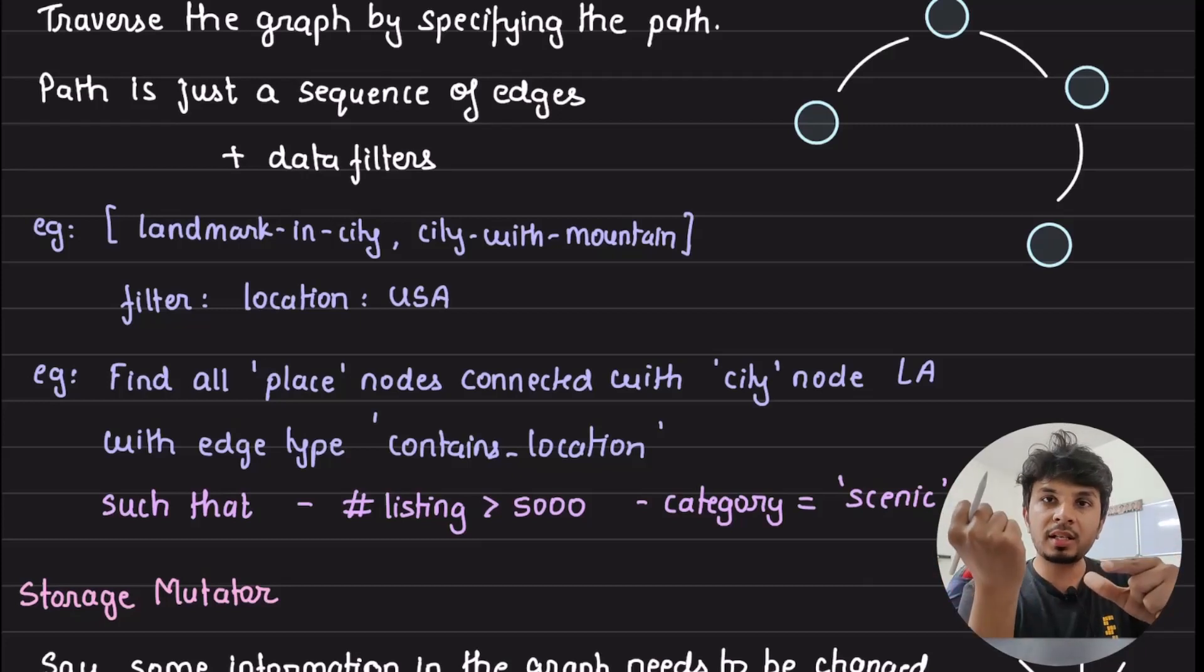The idea is this graph query layer takes an input, a JSON, which is a very sophisticated nested query, converts it into SQL, fires it onto the database, gets the response, and sends it back to the client, right? This is the role of graph query API layer.